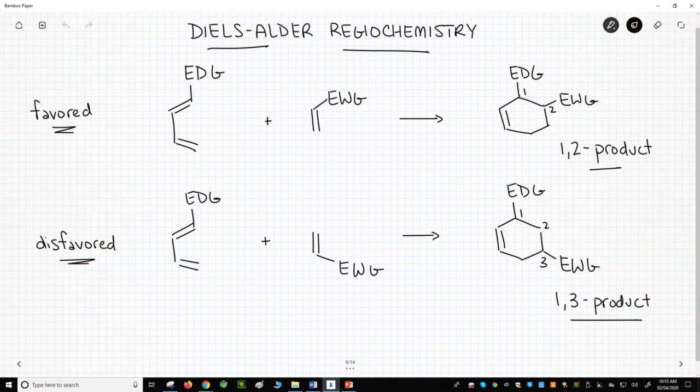On the screen, we have a diene and dienophile doing a cycloaddition. We're going to show both options on one diene and dienophile pair. The diene has an electron-donating group. The dienophile has an electron-withdrawing group.